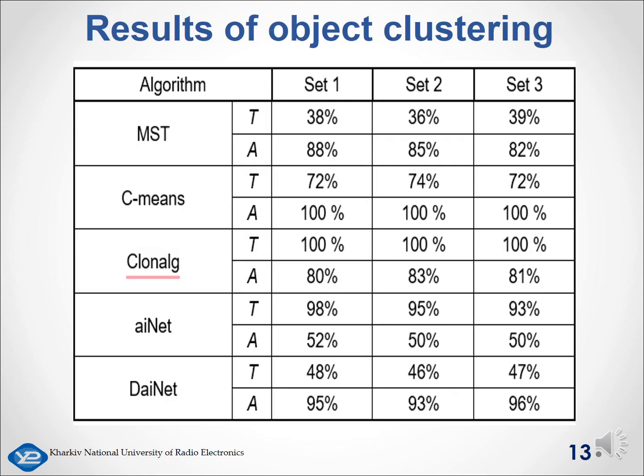A comparative analysis of the proposed clustering method with the data grouping methods C-means and MST, and existing immune models was performed on three sets of objects. When comparing, two main metrics were used: T — time spent by the clustering algorithm on grouping objects, and A — the accuracy of clustering. The results of the comparison, shown on this slide, showed that the C-means algorithm is characterized by maximum accuracy of object grouping, and the CLANG algorithm had the worst performance. The MST method is characterized by the best speed but is significantly inferior to other methods in terms of grouping accuracy. The proposed dendritic method is characterized by high accuracy of data grouping; it outperforms the C-means method in terms of speed but is inferior only to the MST method on that indicator. The dendritic method outperforms other immune methods both in terms of speed and object grouping accuracy.